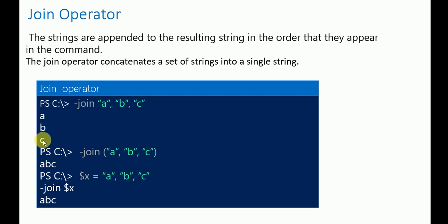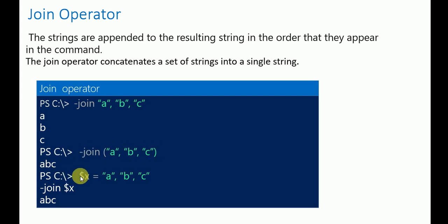For example, '-join a, b, c' outputs 'abc'. Using brackets: '-join (a, b, c)' also outputs 'abc'. You can also store values in a variable: '$x = a, b, c' then '-join $x' outputs 'abc'.